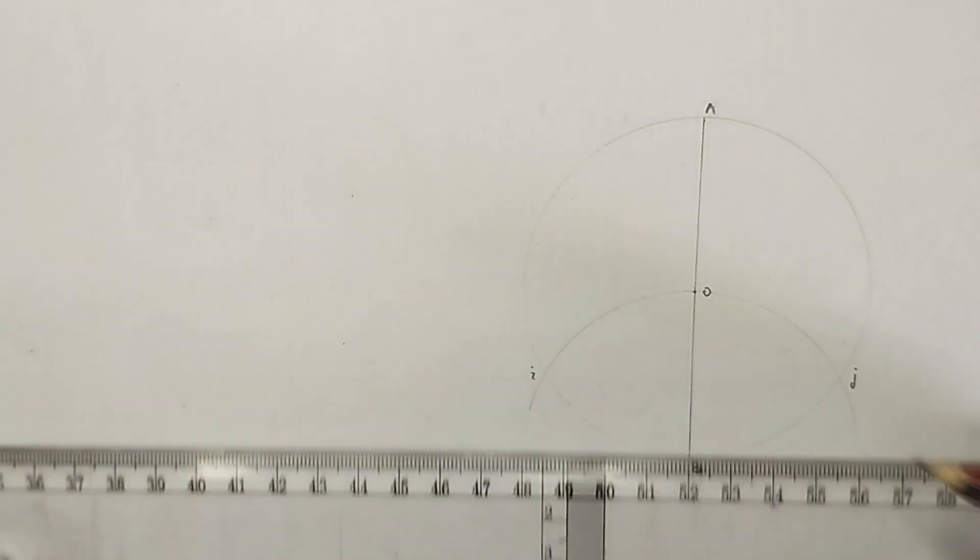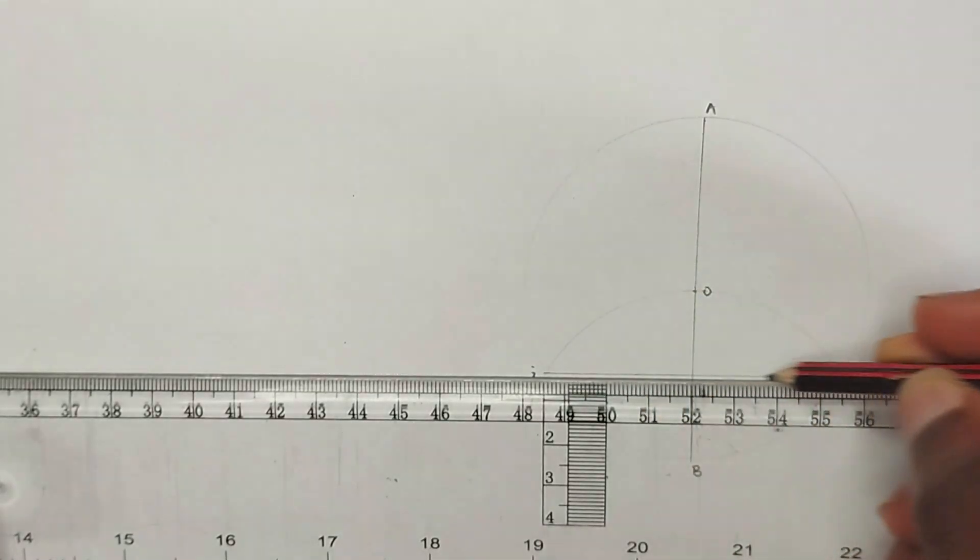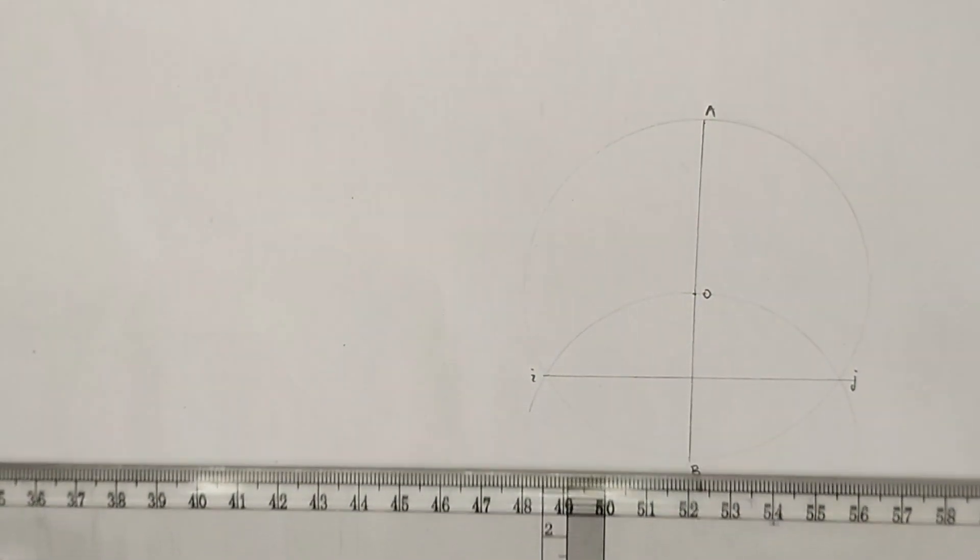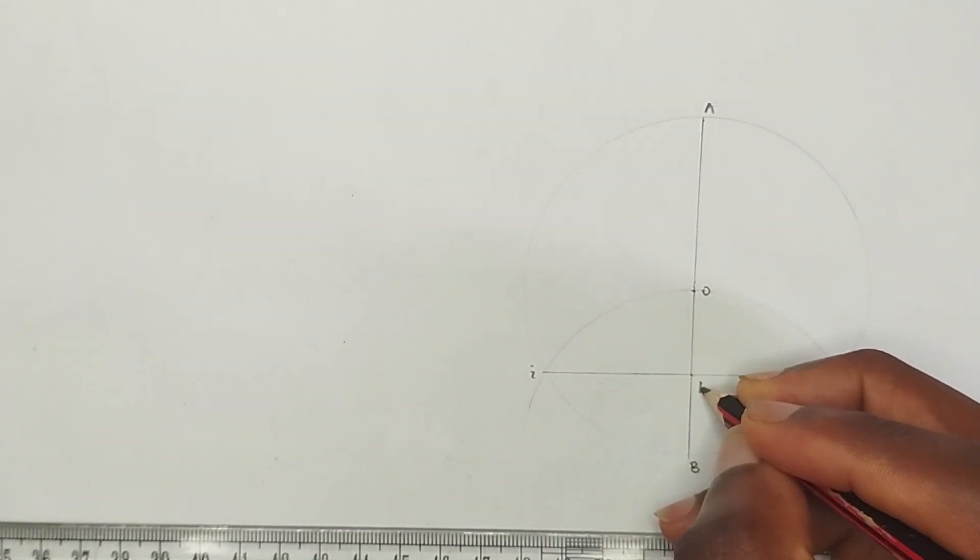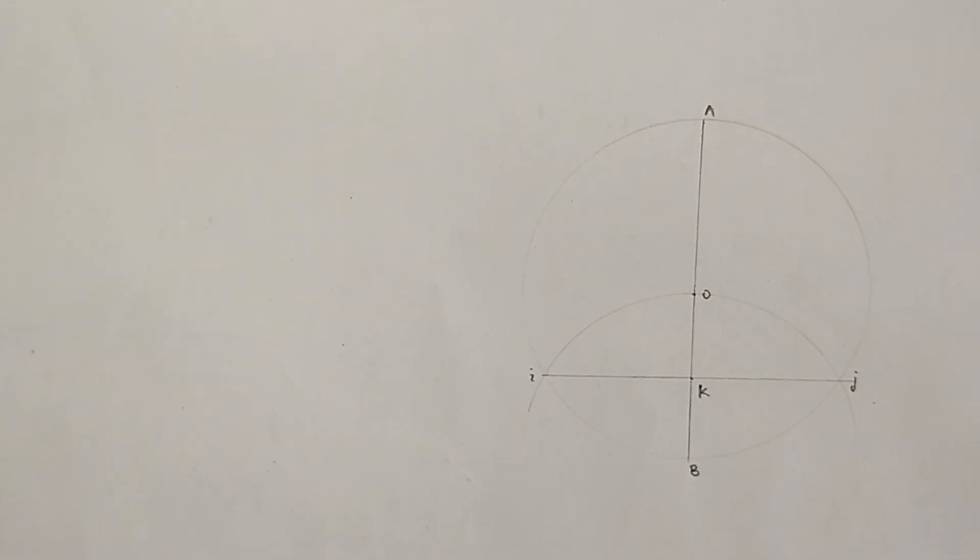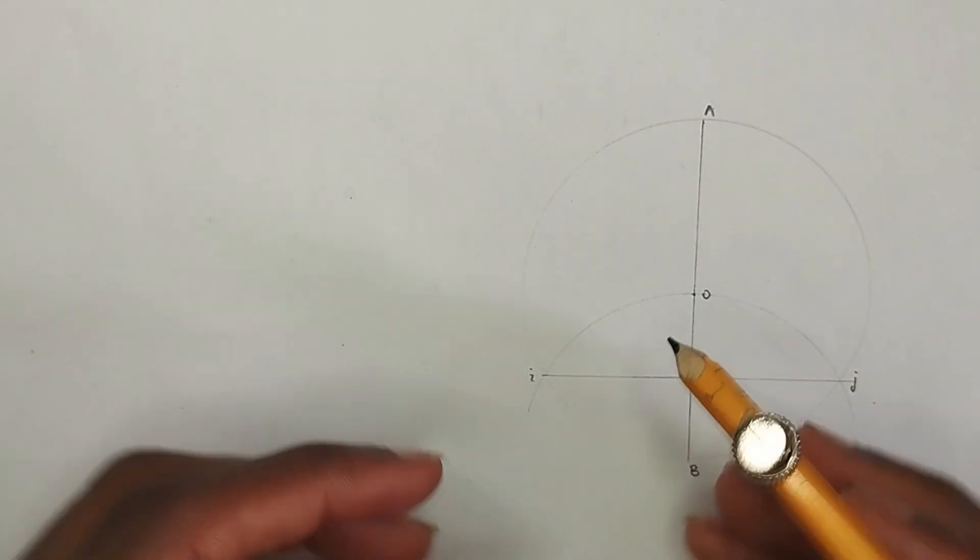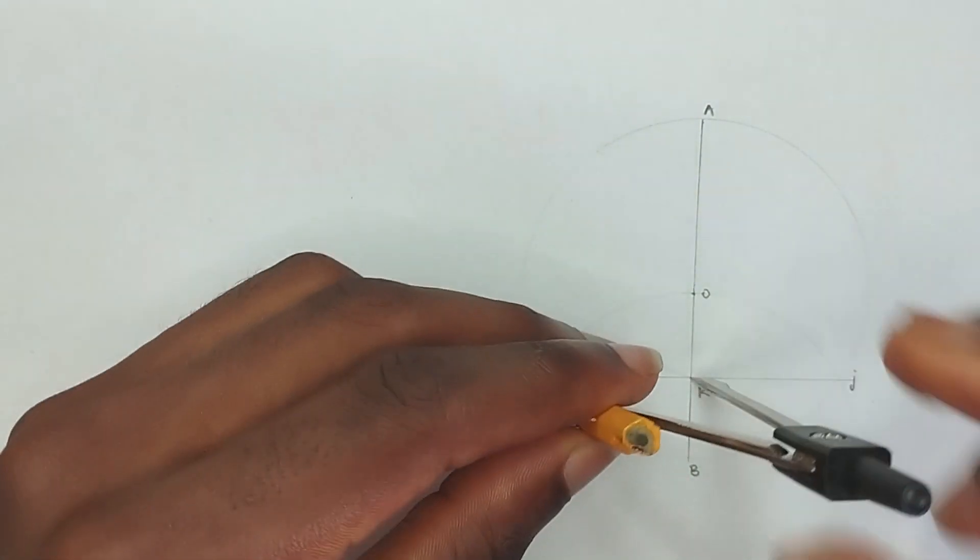From this point here I'm going to draw a straight line. This point I'm going to label here as point K. This is point I, this is J, and this is K. So from point I to K, I'm going to measure the length on my compass.